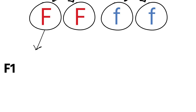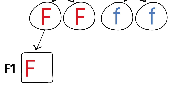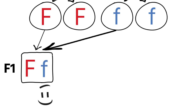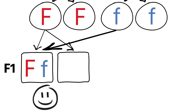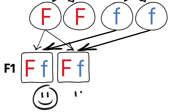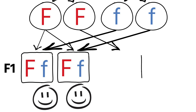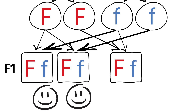Then we can look at all the possible offspring that could be produced from these gamete alleles — that's what we'd call the F1 generation, the first generation of offspring. If we look at the F1 generation, in the case of homozygous dominant crossed with homozygous recessive, the only possible combination is all heterozygous offspring.